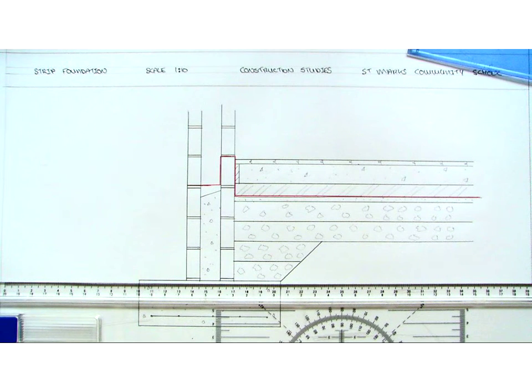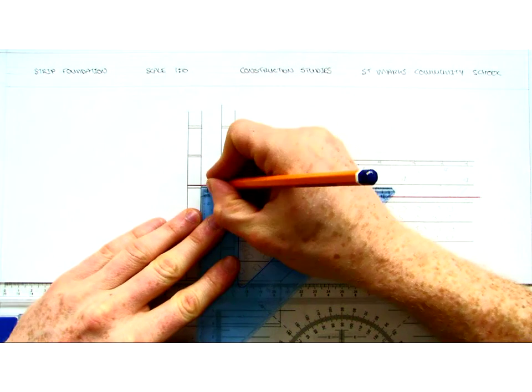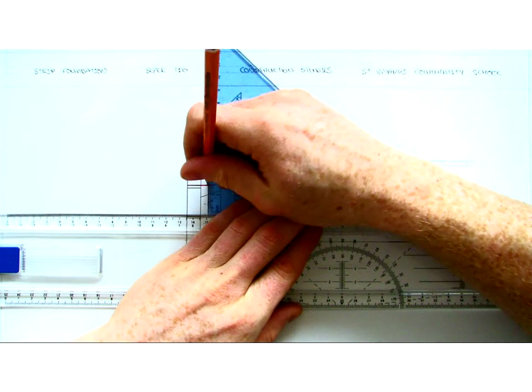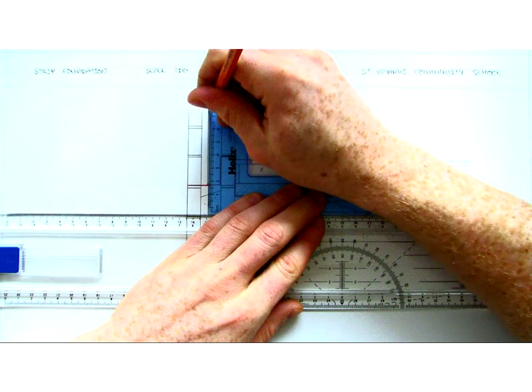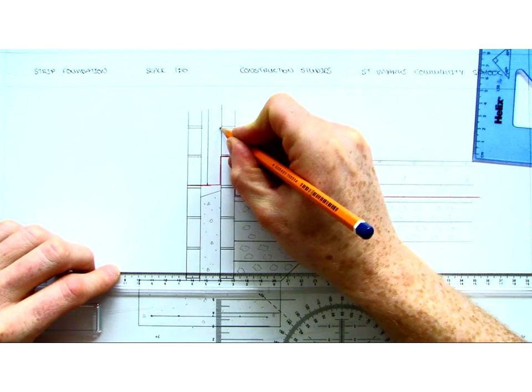Now to complete the drawing we must indicate inner cavity insulation. So inner cavity we have 100mm of insulation. We can measure out 100mm from the internal wall and draw our line up. Again we can indicate that it is insulation by drawing our hatched lines.